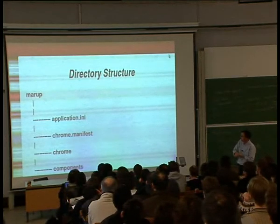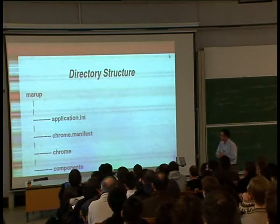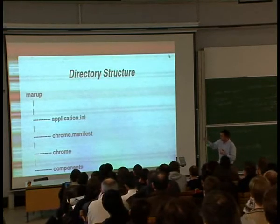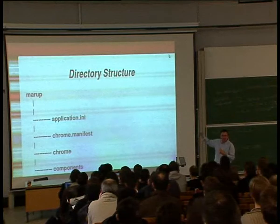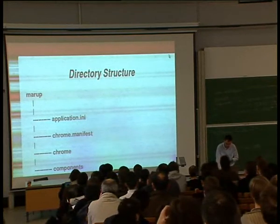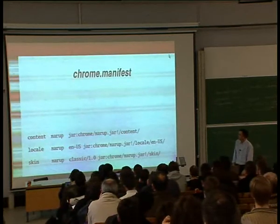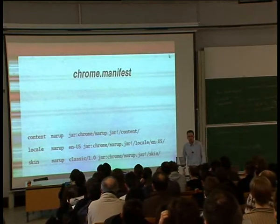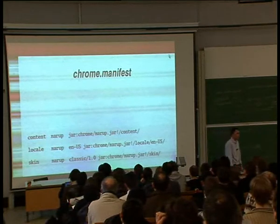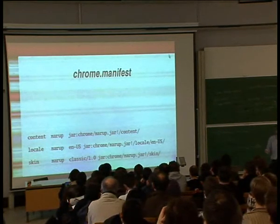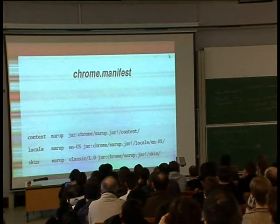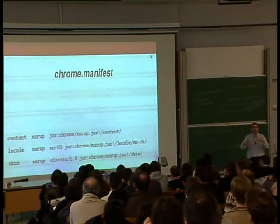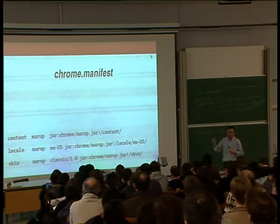Here's the actual directory structure: the application.ini file, the chrome manifest file, and chrome and components directories — all on the same level in the tree. If you remember the old days, the chrome manifest file for Mozilla Chrome was an RDF file — a little abstract. You had to learn how to map your Chrome directories to Chrome URLs used internally in your extension. It's simpler now.